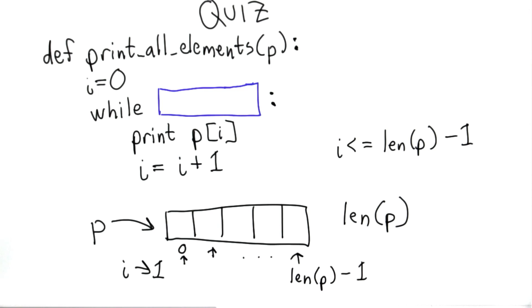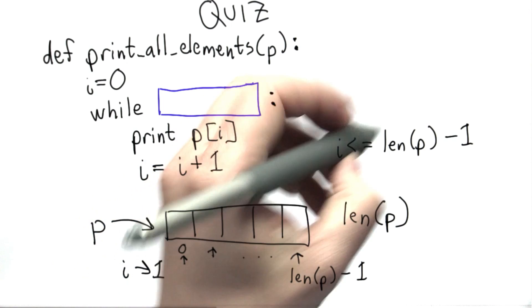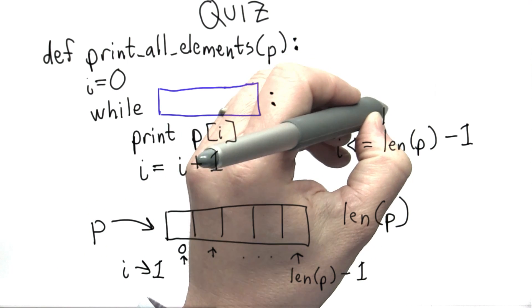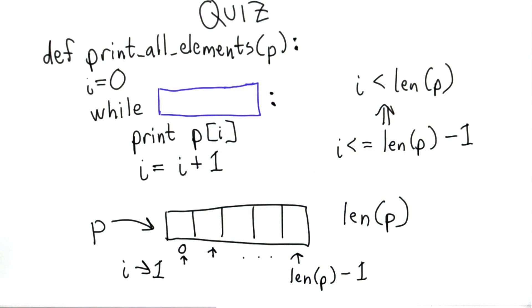Since we know i is an integer, since we created i, initialized it to the value 0, and the only thing we do with i is add 1 to it, this is equivalent to a simpler expression: i is less than len(p).